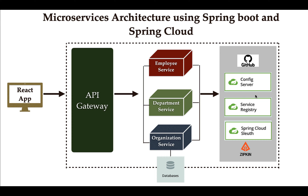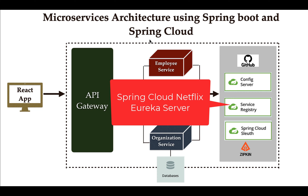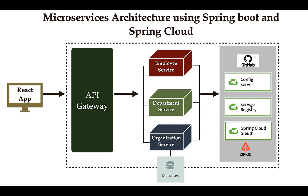Once we know how microservices communicate with each other, we are going to implement the service registry and discovery pattern. Spring Cloud provides the Spring Cloud Netflix Eureka based service registry model that we can use to implement this pattern in our microservices project. Service registry and discovery is a very essential pattern that helps us avoid hard-coding hostnames and ports.